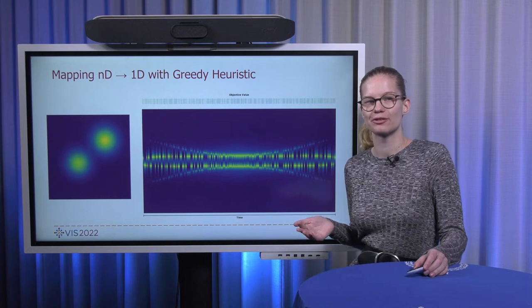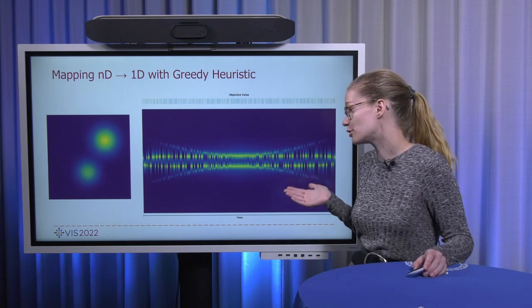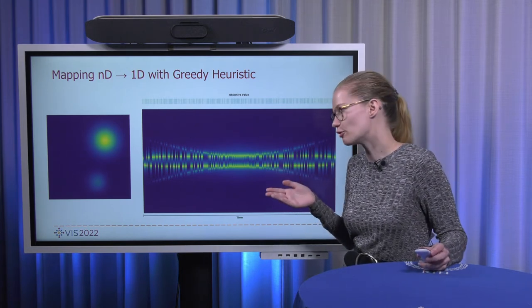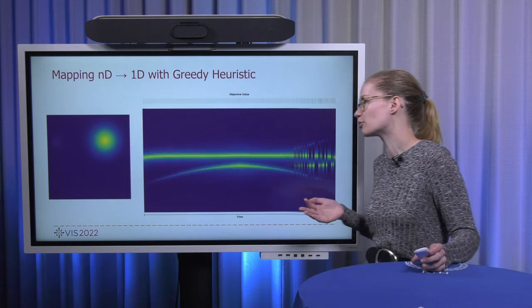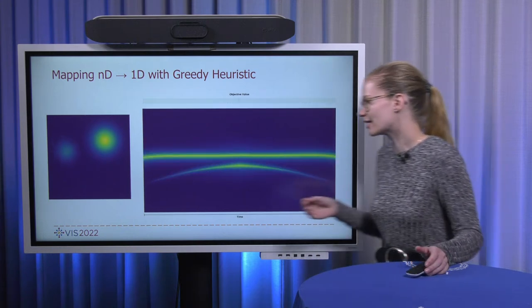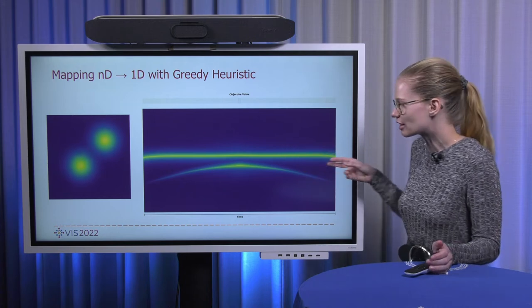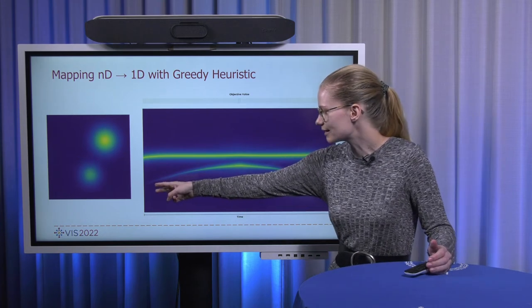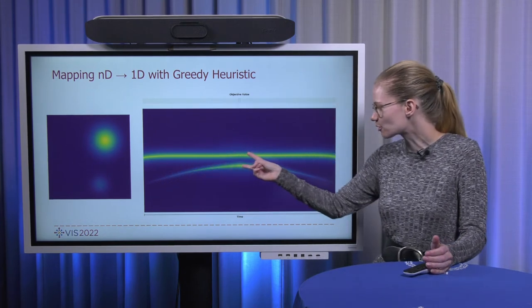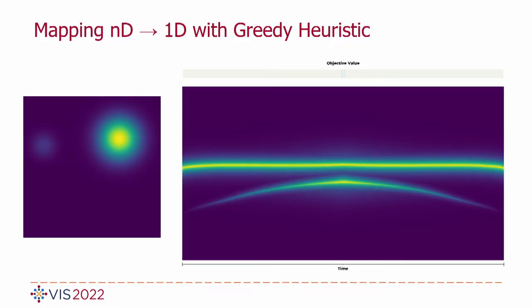So how does the result look then for the dataset that we had previously with the one moving feature? Well, if we employ optimization here, then we get one feature that persists over time and one that comes in, moves a little bit closer and moves out, which is also the behavior that we observed in two dimensions.